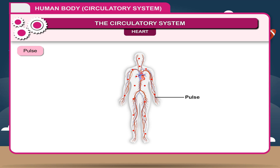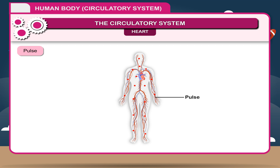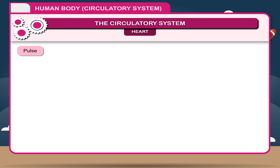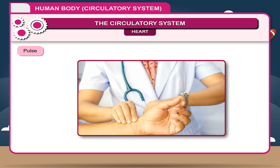Pulse is a rhythmic expansion of the arteries resulting from the passage of successive flow of blood produced by the continuing contractions of the heart. In disease, the pulse rate usually varies in direct ratio to the body temperature.